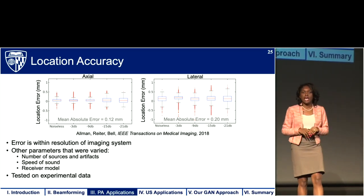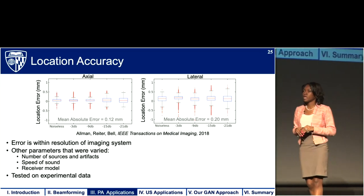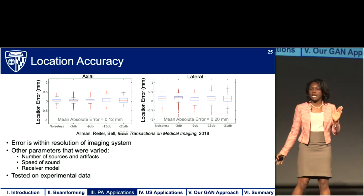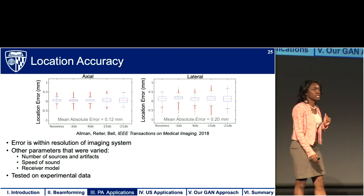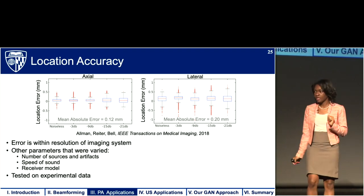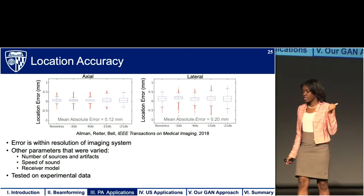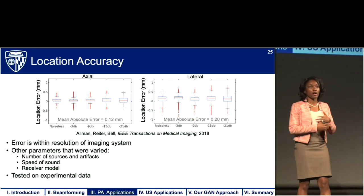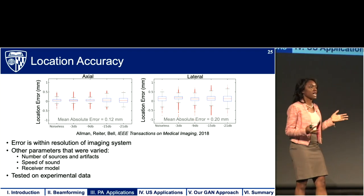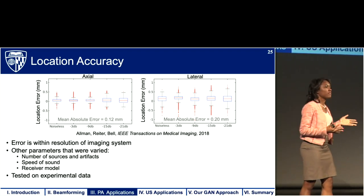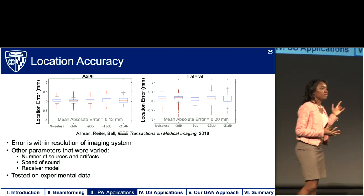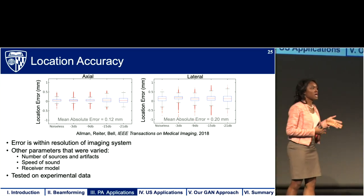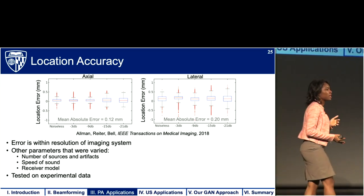This is remarkable because we're actually achieving better resolution than the resolution provided by beamforming methods alone, and this is true at a range of noise levels and depths. There are a host of other parameters that can be varied — such as the number of sources and artifacts, the speed of sound, and our ultrasound receiver model — which I won't show in the interest of time.